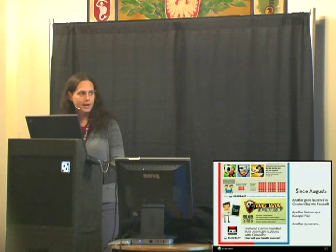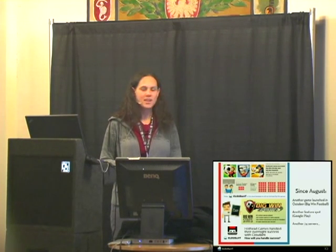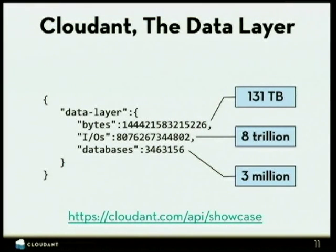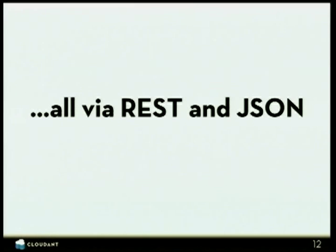They got another feature spot on Google Play, and we've had to add another 24 servers to the cluster. It's a big amount of data — right now we're around 131 terabytes, about 8 trillion input-output operations since we've started recording this data, and about 3.4 to 3.5 million databases. You can hit that endpoint right at the bottom there and pull our live data any time you want — you'll get this JSON document back. It's all via REST and JSON, 100% of it.